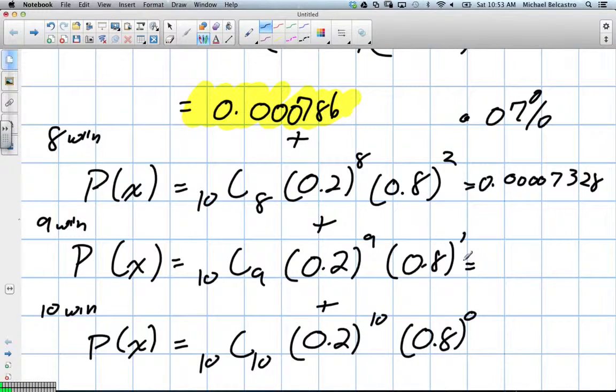Let's try the next one. 10 combination 9, times 0.2 to the power of 9 times 0.8. Okay, this one's even smaller. 0.0000124. And then finally, the last one.